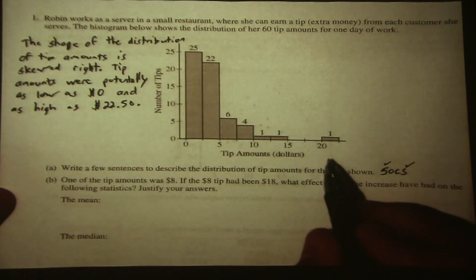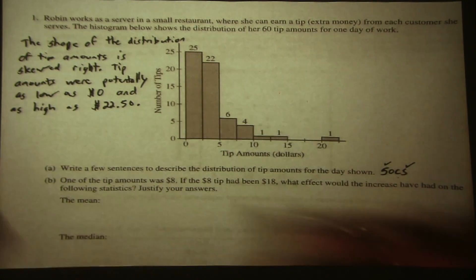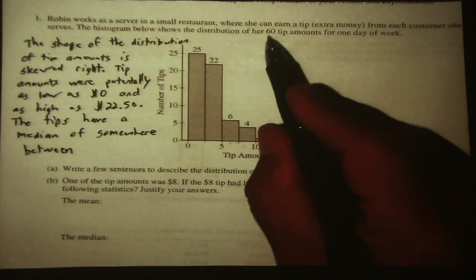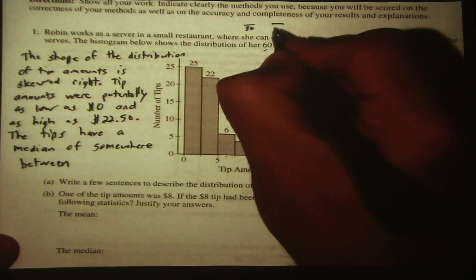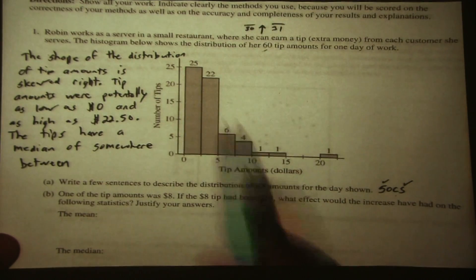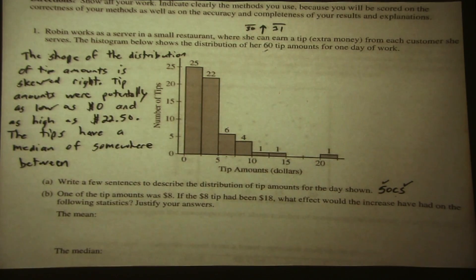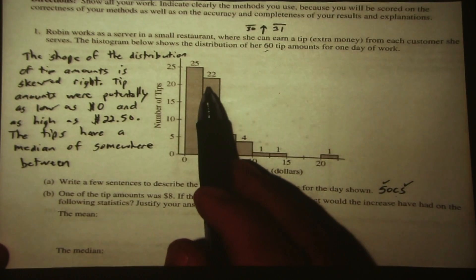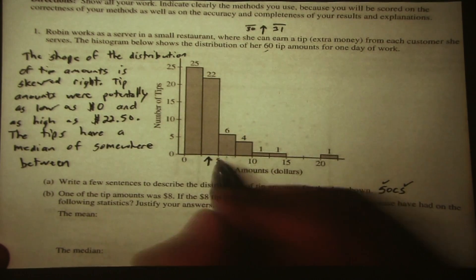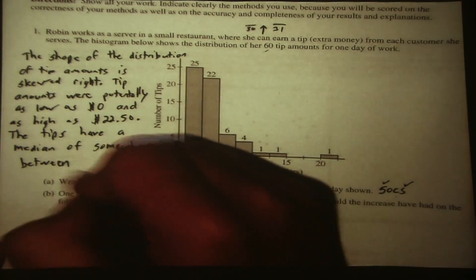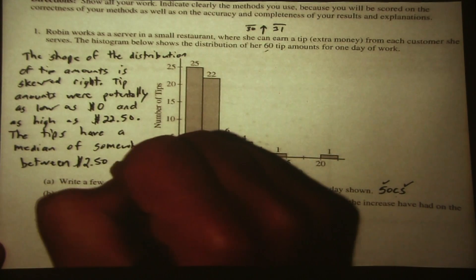Since our distribution is skewed, the best measure of center would be median. So let's figure out the median. Since there are 60 tip amounts total, the median is going to be between the 30th and 31st tip amount when listed from lowest to highest. Looking at the histogram, here are the first 25 tips, then the next 22. So the median is going to be somewhere between $2.50 and $5. The tips have a median of somewhere between $2.50 and $5.